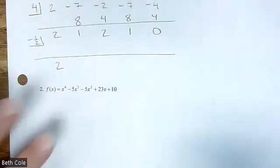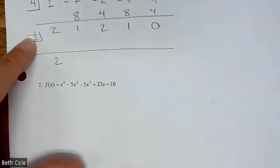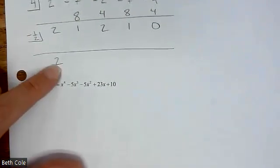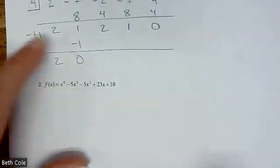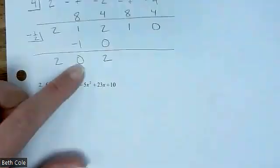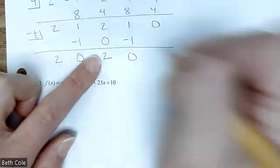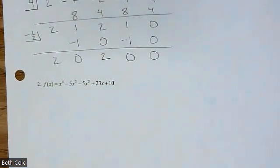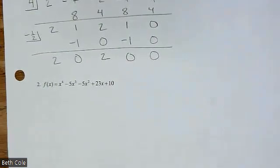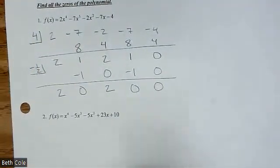Bring down the 2 and do it again — there's a fraction so watch me. Negative a half times 2 is not 1, but negative 1. Add the column: zero. Anything times zero is just zero. Add the column, you get 2. Negative a half times 2 is negative 1. Add, you get zero. Now we're going to put the x's back. We started to the fourth, divided out twice, so now we're down to squared: 2x² + 0x + 2.